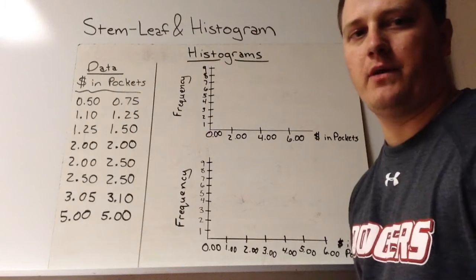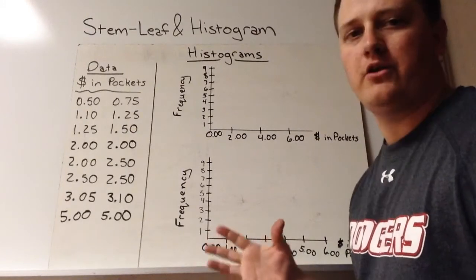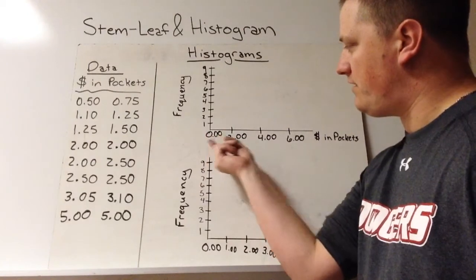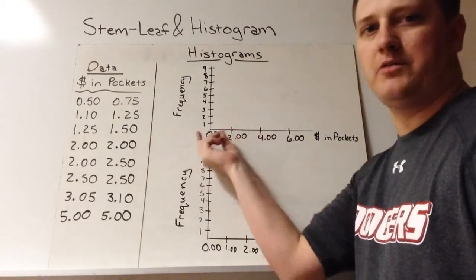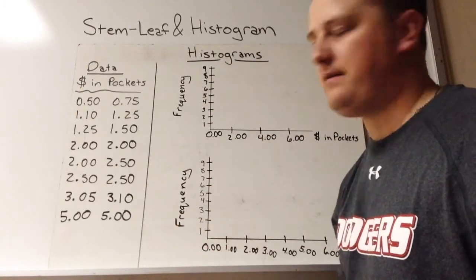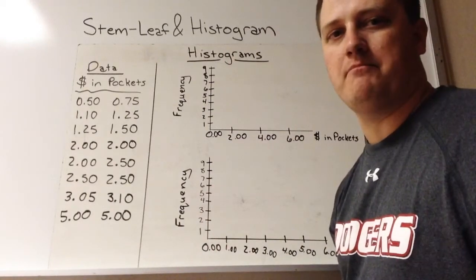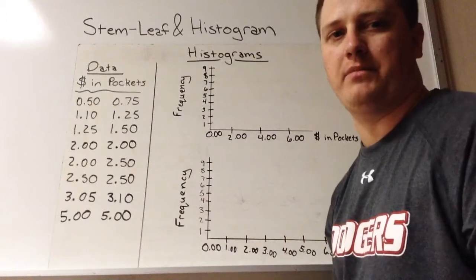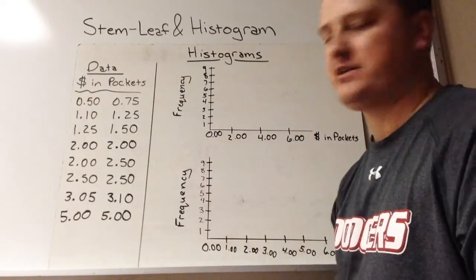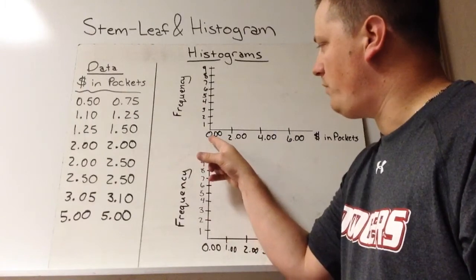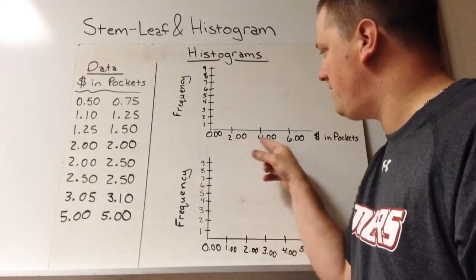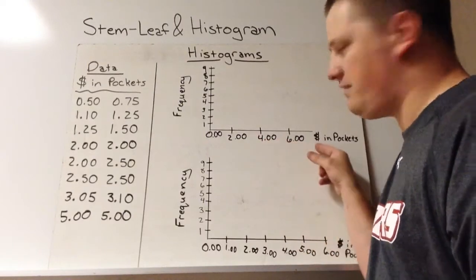Histograms are a little bit different. I'm going to make two histograms. The groupings — zero to two dollars, two to four — are called bins, and the height of each bin tells us the frequency. This is a mix between a bar graph and a stem and leaf plot. From zero to two dollars means we go from zero to a dollar ninety-nine; two dollars would go in the next bin, four dollars in the one after.